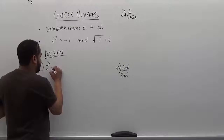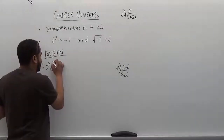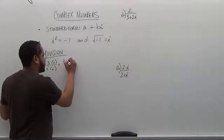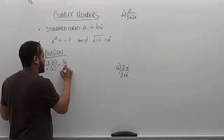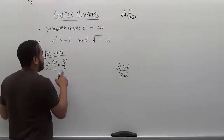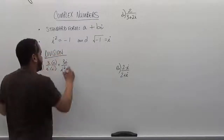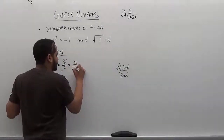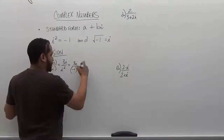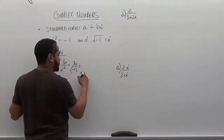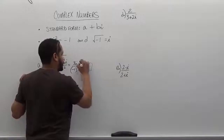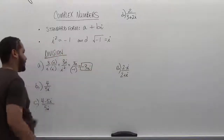By multiplying by i over i, we're going to get 3i on the top, and i squared on the denominator. Remembering that i squared becomes negative 1, we get 3i divided by negative 1, which then becomes negative 3i. That's our rationalized term.